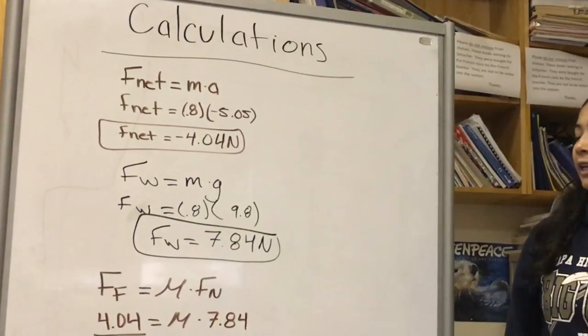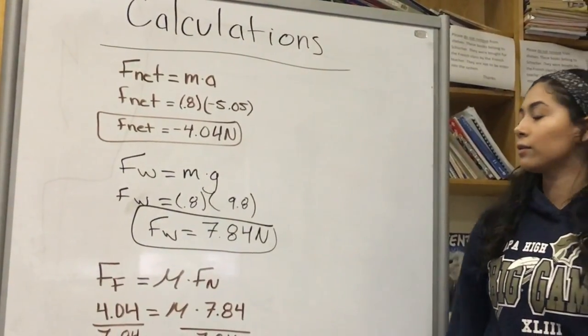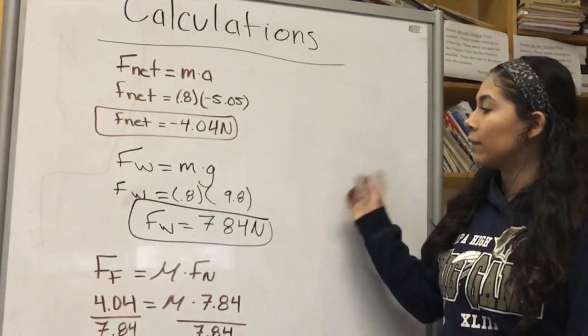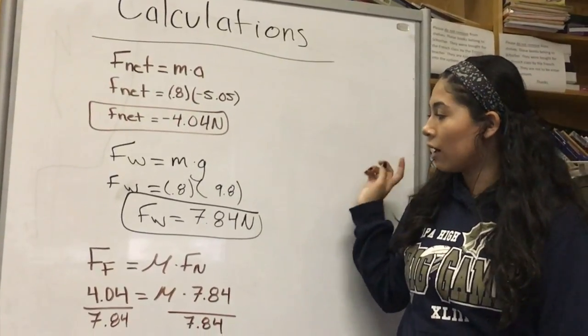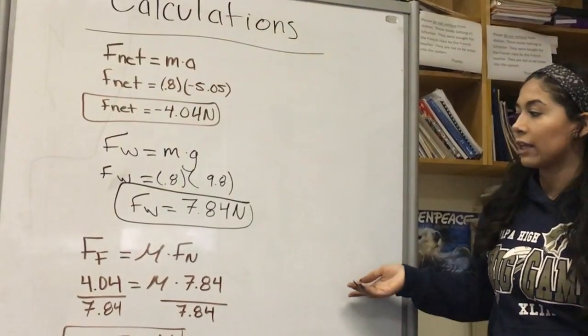Then, to solve for weight using fw equals mass times gravity, I plugged in 0.8 and 9.8 and got 7.84 newtons once I put those together.